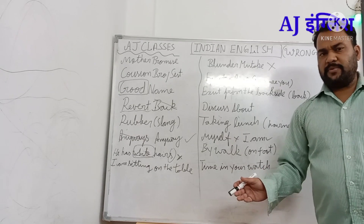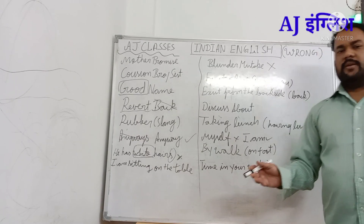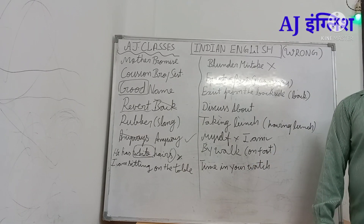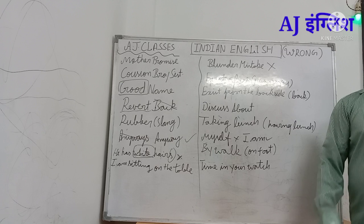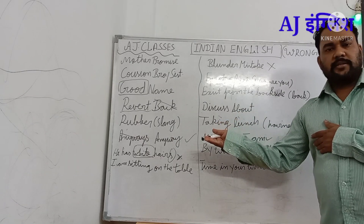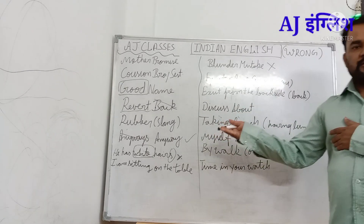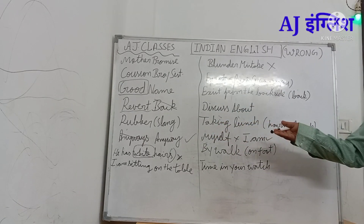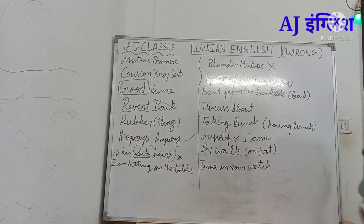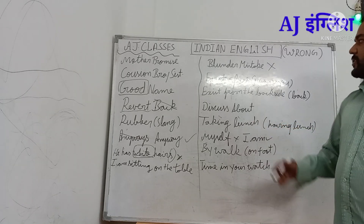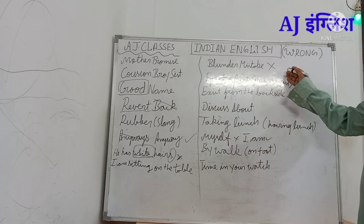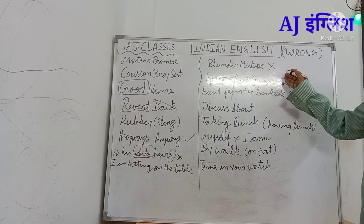We say 'I am sitting on the table,' but the correct preposition is 'at.' Say 'I am sitting at the table.' Similarly: 'he is at home,' 'she is at the computer' — not 'on the computer.'